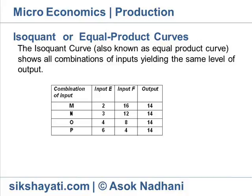Isoquant, or equal product curves. The isoquant curve, also known as equal product curve, shows all combinations of inputs yielding the same level of output. All the combinations M, N, O, and P give the same level of output.